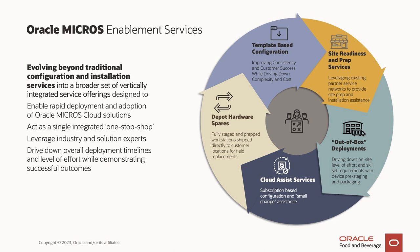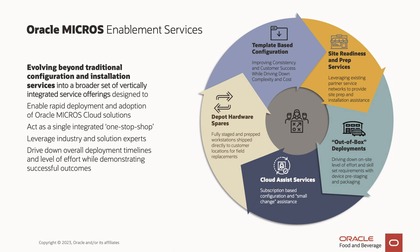In addition to our out-of-the-box deployment services, we've also launched two other key initiatives: our Cloud Assist Services — a subscription-based configuration and small change assistance model covering standard configuration changes, client upgrades, standard template deployments, hypercare, and staging support — and depot hardware spares, giving us the ability to hold fully staged and prepped hardware spares ready to ship directly to customer locations for field replacement. We've established centralized staging centers to service North America, Latin America, and EMEA, with additional staging centers for the JPAC region to follow shortly.